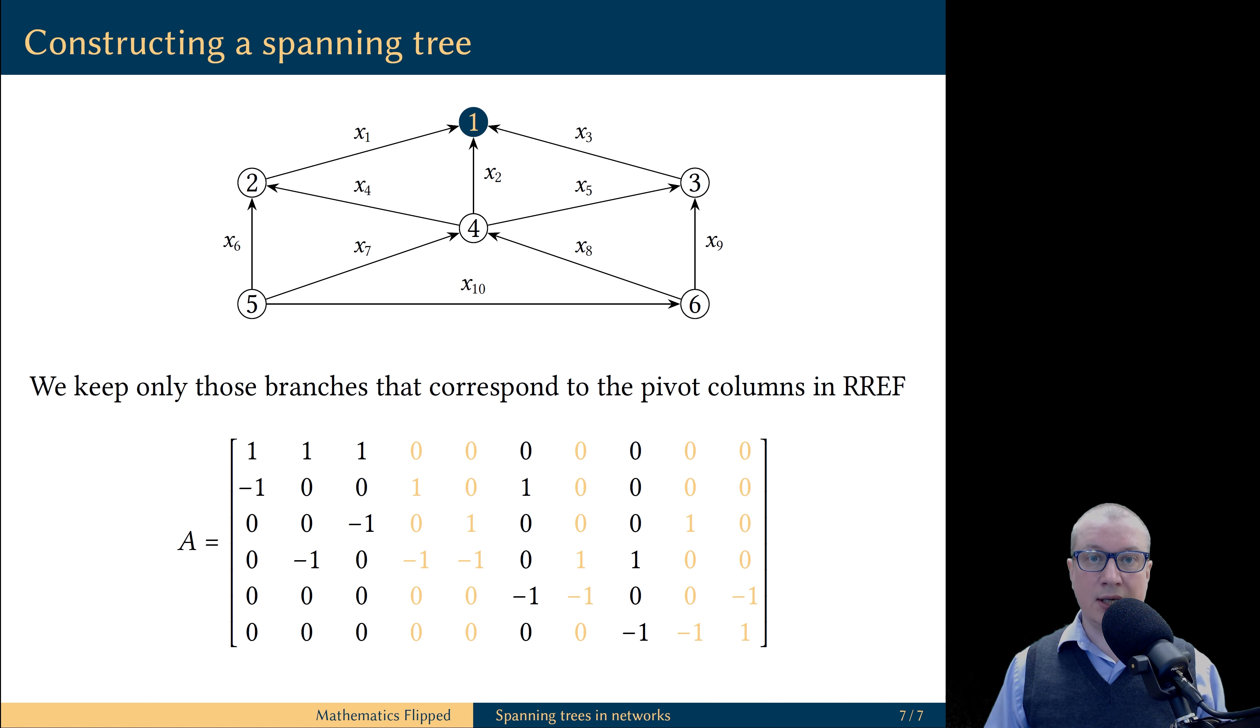This computation tells us that there are five branches that create loops in the network and we do not need these branches.